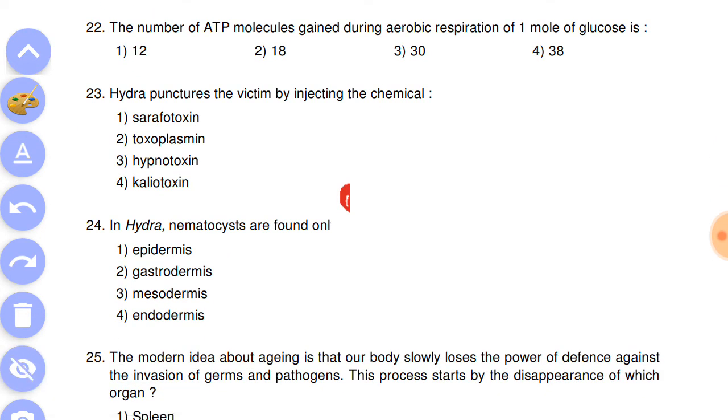Question number 22: the number of ATP molecules gained during aerobic respiration of one mole of glucose is answer is the fourth, thirty-eight. Next question: Hydra punctures the victim by injecting the chemical answer is the third, hypnotoxin.